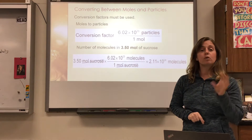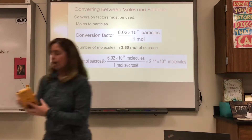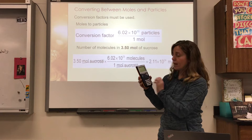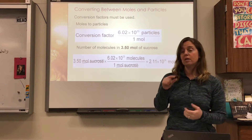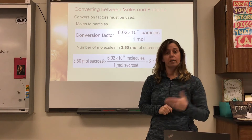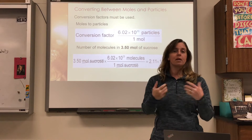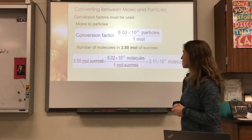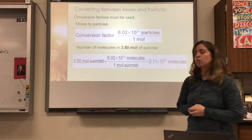If you use the EE button on your calculator — it's above the 7, you hit second then comma — it brings the number to a power of 10 for you. You'd type in 6.02, then hit second EE, and you'll see an E on the display; then type in the exponent. You don't need parentheses because it does it for you. Taking 3.5 and multiplying by the conversion factor gives you 2.11 times 10 to the 24th.